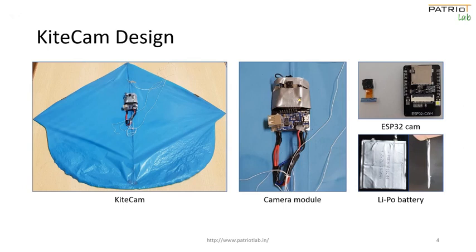KiteCAM is a camera module attached to the spine of the kite, as seen in the images on the screen. The location for attaching the camera module was specifically chosen to maintain overall stability by placing the module near the center of gravity of the kite. The camera used was an ESP32-CAM module with an OV2640 camera, powered by two thin lithium polymer batteries of 180 mAh capacity each. The kite used is a simple thin plastic kite, purposefully chosen to demonstrate the superiority of this approach, which nullifies the kite-specificity issue of present KAP structures.